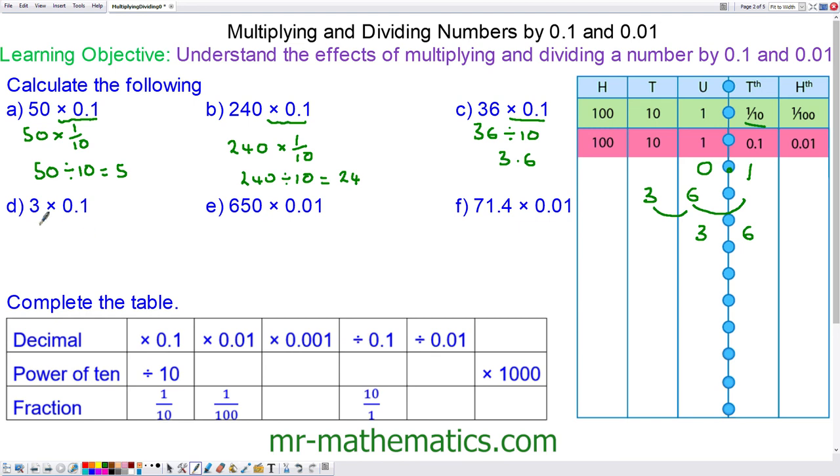For question D we have 3 times 1 tenth or 3 divided by 10. In our place value table, 3.0. And we're moving every number to the right one place. So we have 0.3.